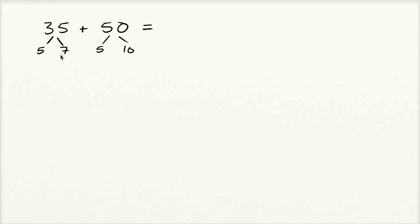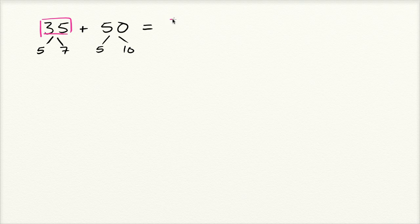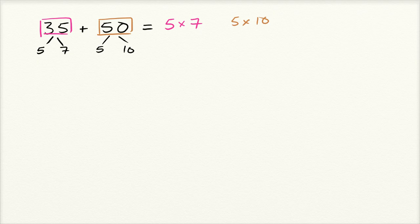Seven and 10 don't have any factors in common, so I could rewrite this. I could write 35 as equal to five times seven, and I could rewrite 50 as five times 10, and of course I'm adding them, so I have plus right over here.